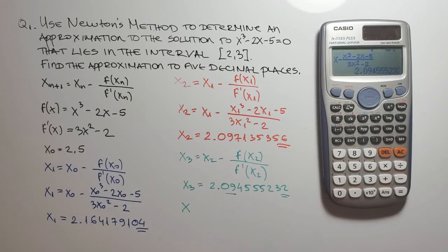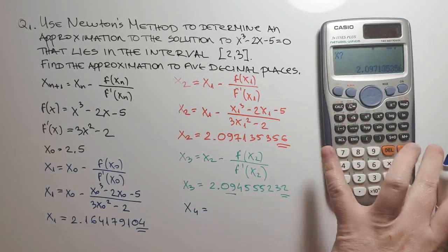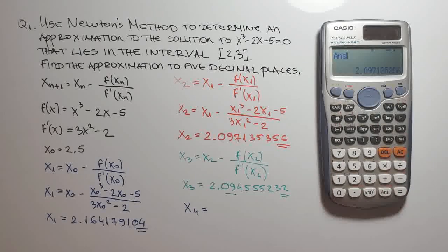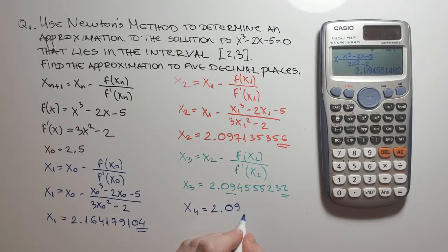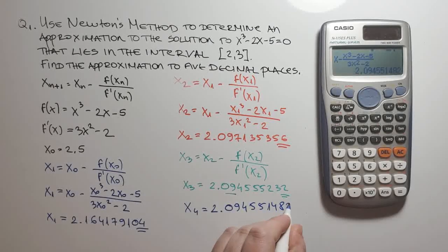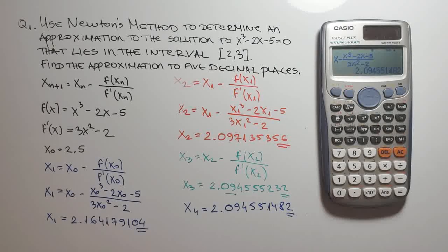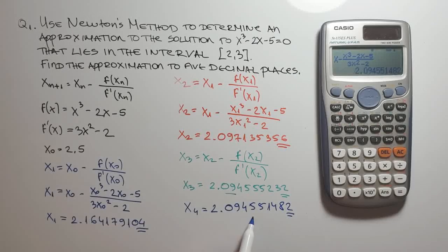x sub 4. So x sub 4, I'll press the calc key, I'll press the answer key, equal. Here it is, 2.094551482. We compare x sub 3 and x sub 4 and here it is. After 4 iterations of Newton's method, we found an estimate to the real solution to 5 decimal places.